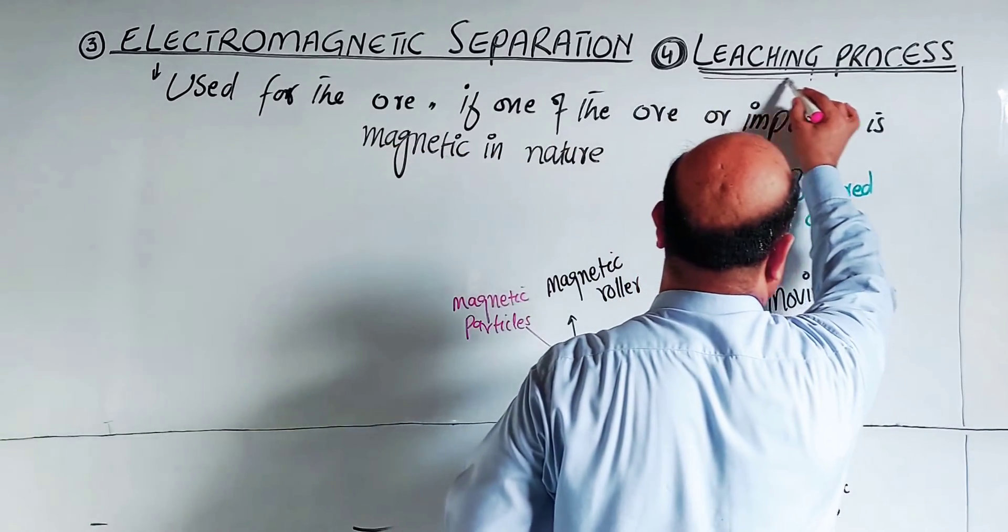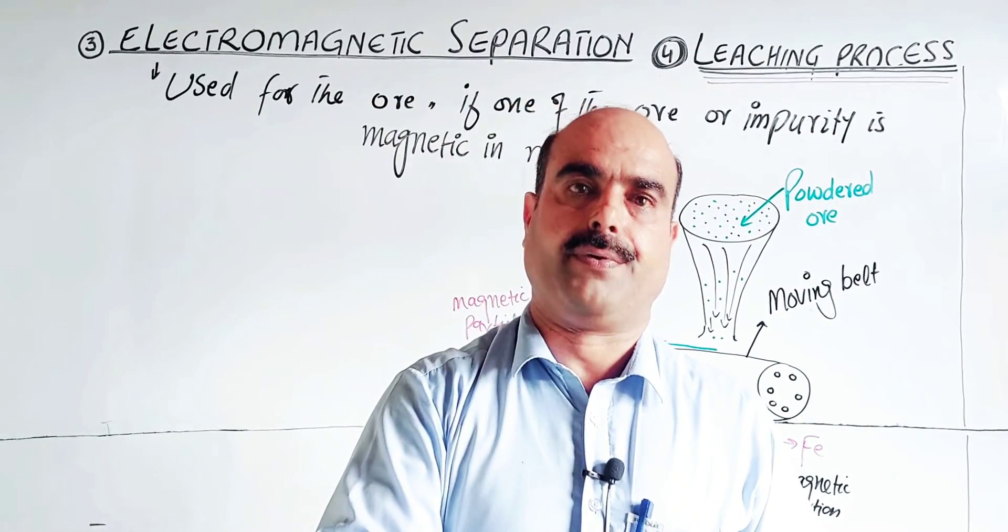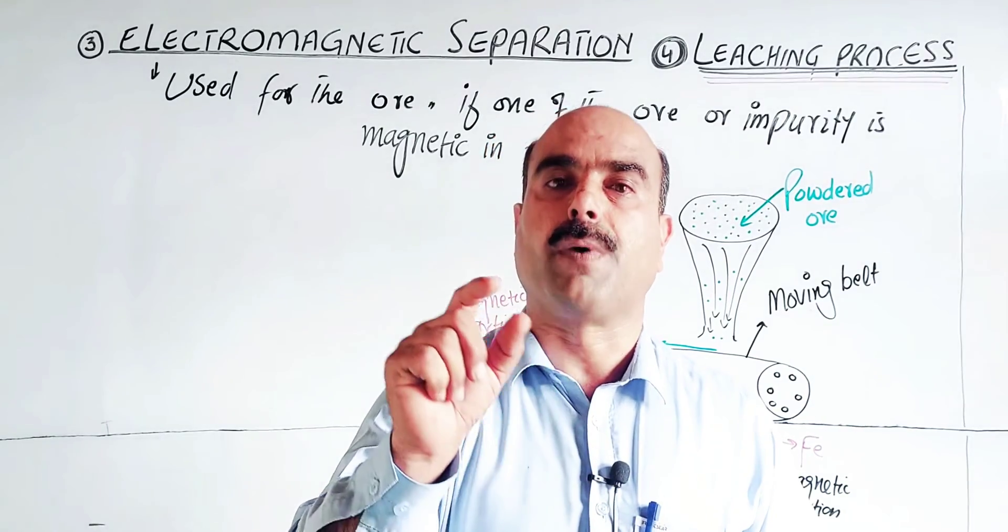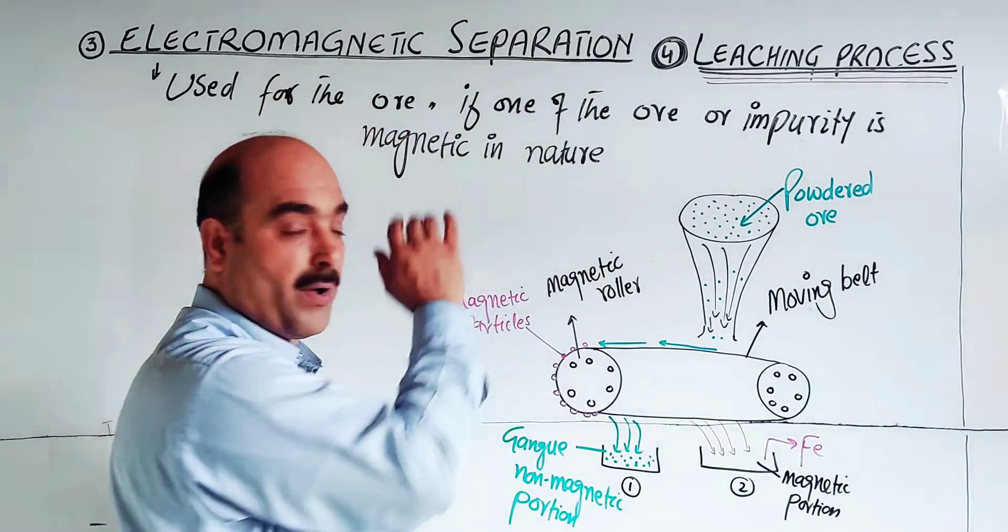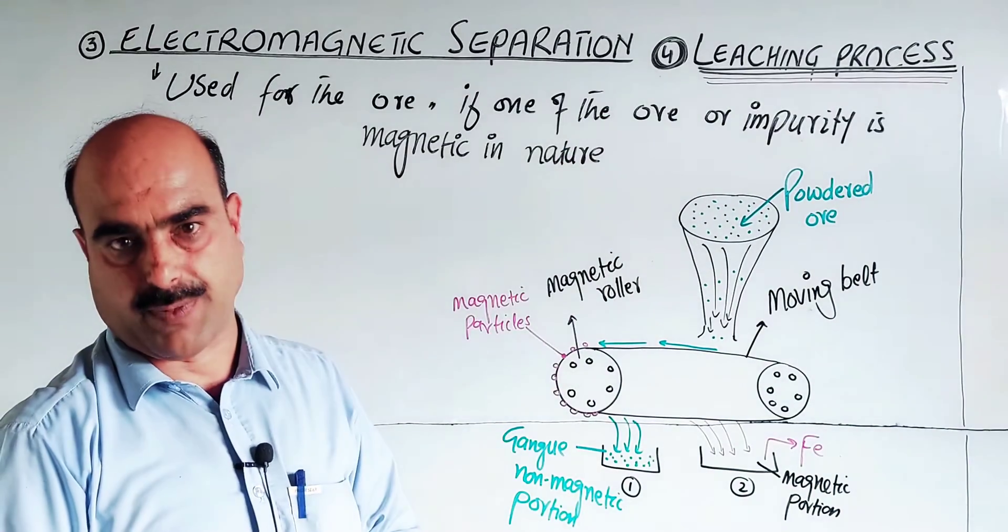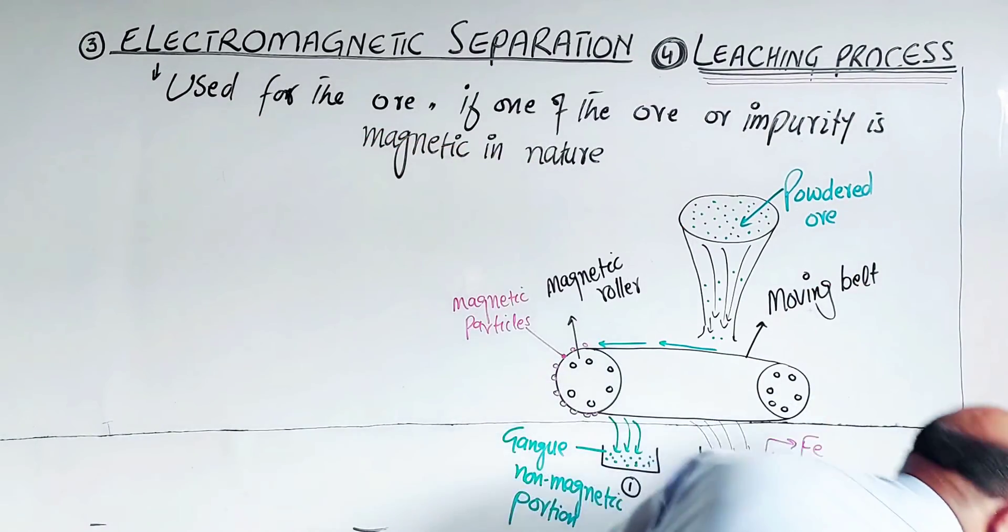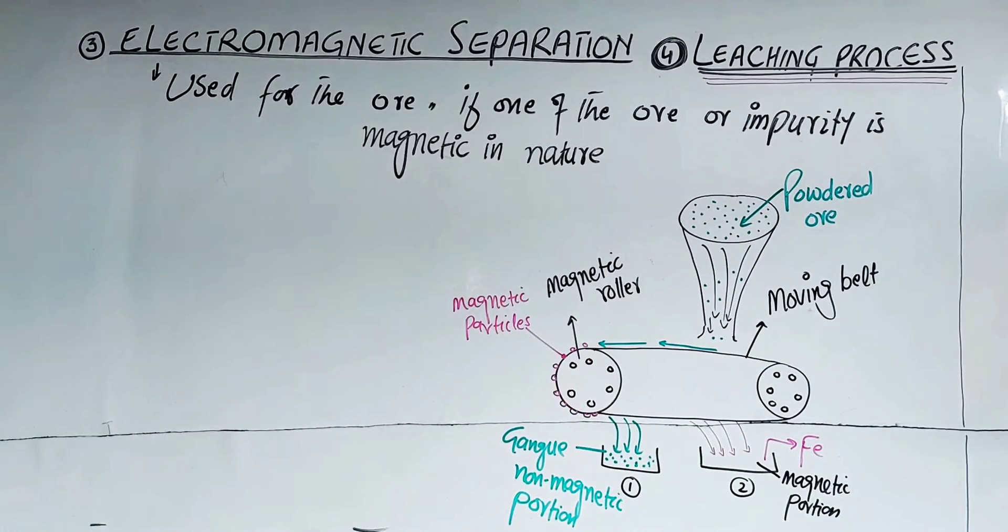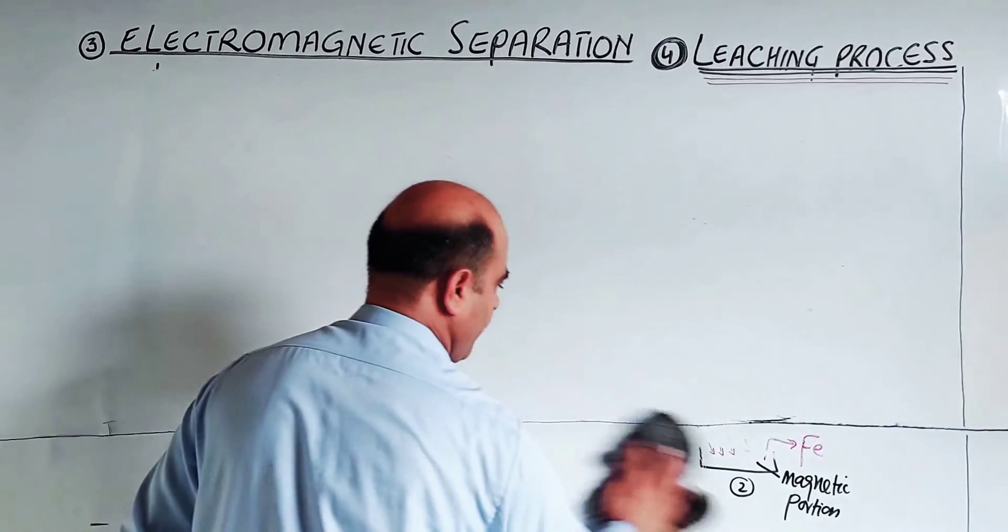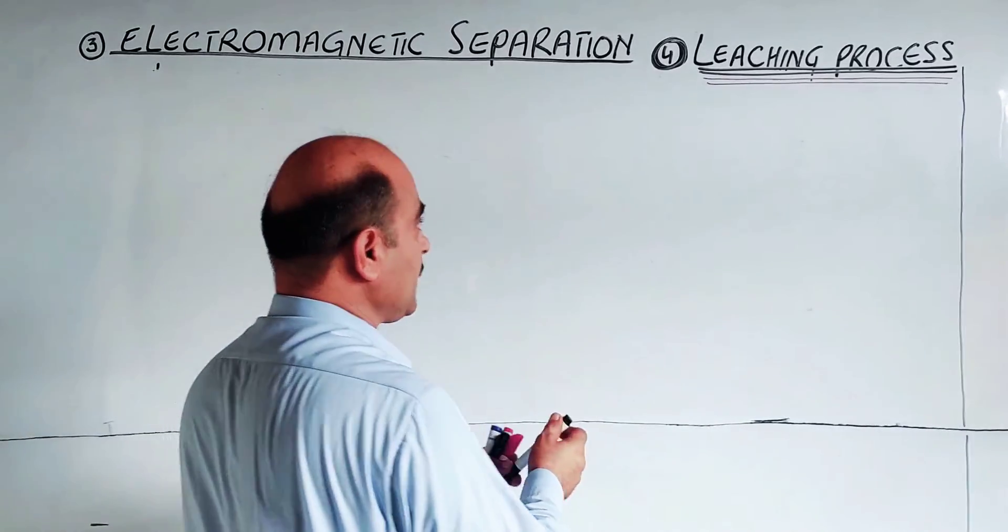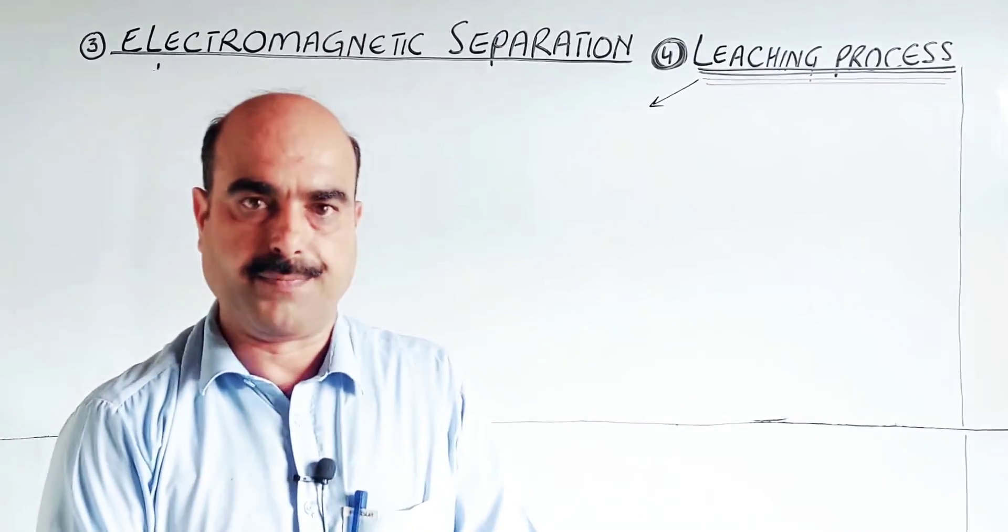The next method of concentration is leaching process. Concentration is the first step before the metallurgical process. Impurities can be removed by hydraulic washing, froth flotation, electromagnetic separation, or leaching process, depending on the nature of the ore and impurities.